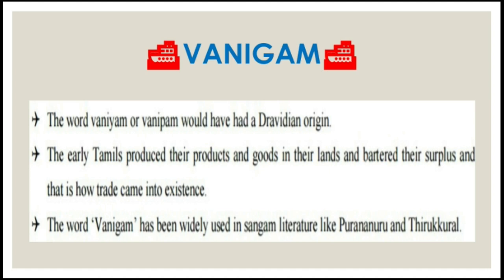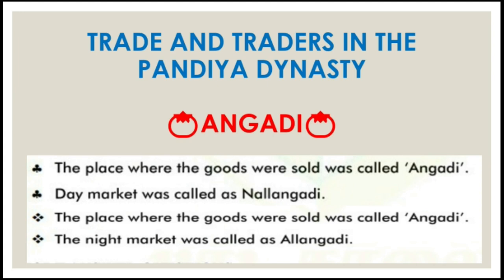For example, Tamil Brahmi inscription from Alagar Malai, Pughalur, Mangulum and Sri Lanka illustrate the fact that trade in gold, oil, cloth, etc. was conducted during the early age. So the trade in the Sangam period was both internal and external, but it was conducted by means of barter.